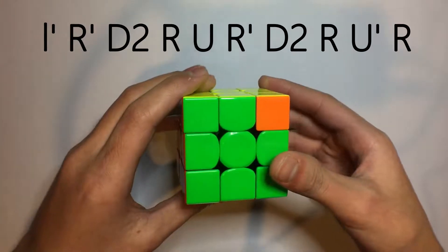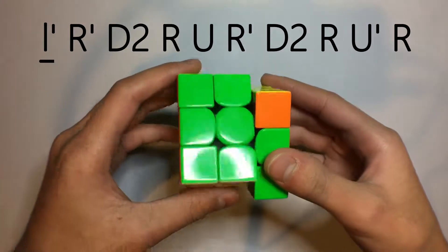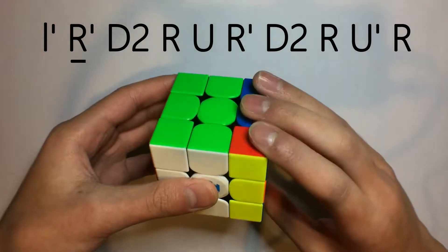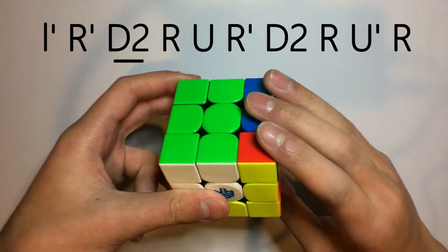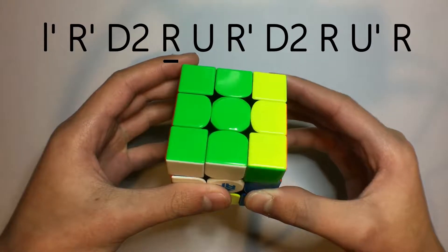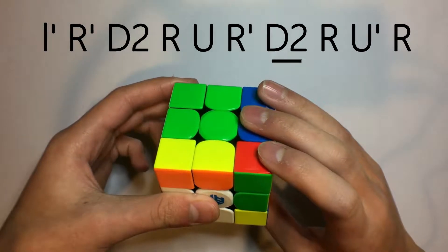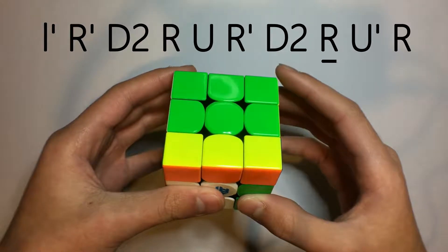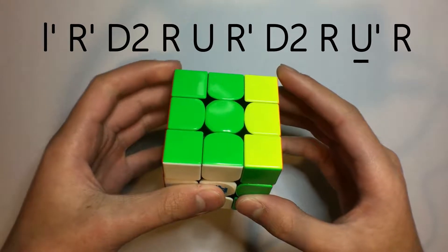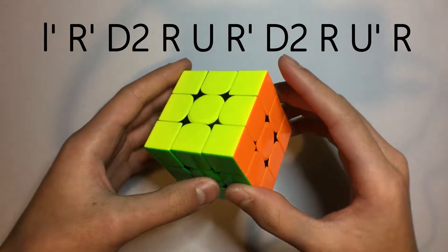The algorithm goes like this: Y L prime, R prime, D2, R, U, R prime, D2, R, U prime, R. And that solves the cube.